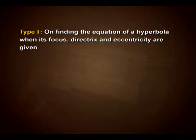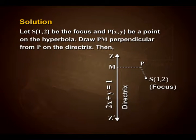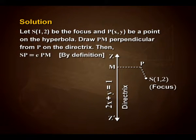Here is an example. Find the equation of the hyperbola whose directrix is 2x + y = 1, focus (1, 2) and eccentricity is √3. Look into the solution. Let S(1, 2) be the focus and point P(x, y) be a point on the hyperbola. Draw PM perpendicular from P on the directrix, then SP = e × PM, that is by definition.